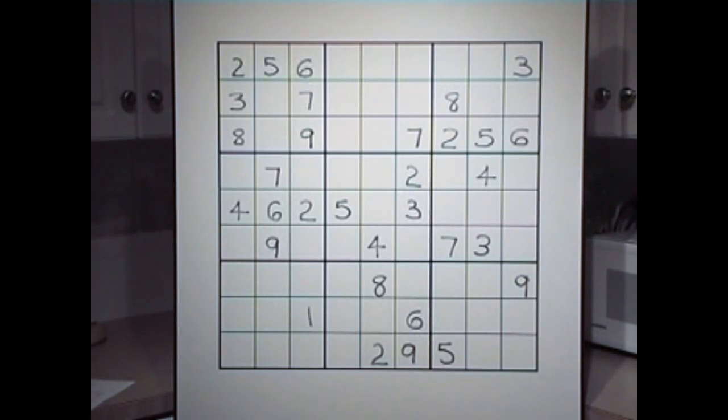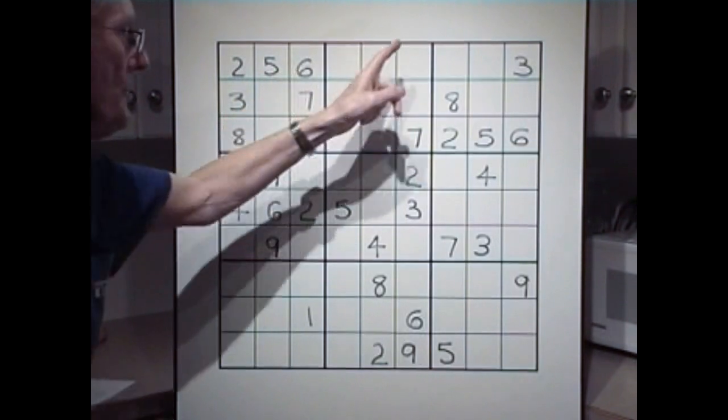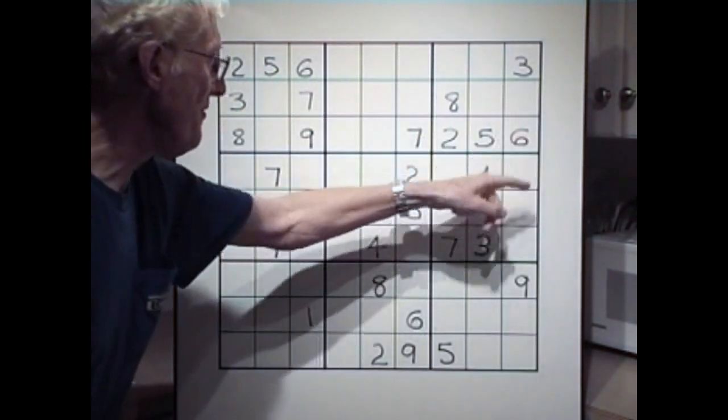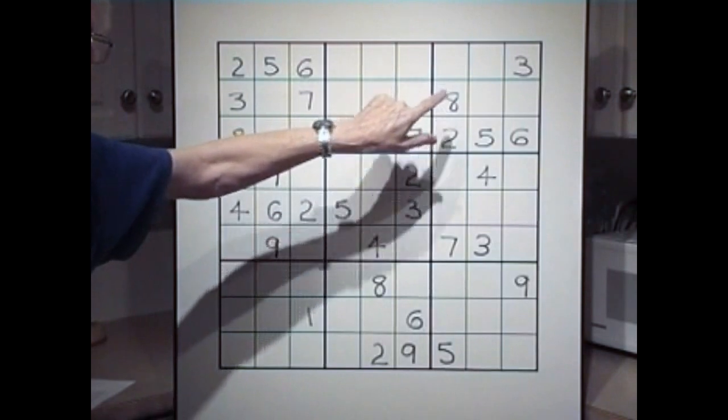In this case, I don't know if you've noticed it yet, but here we have a 256, and over in this block we have a 256, therefore there has to be a 256 in here.